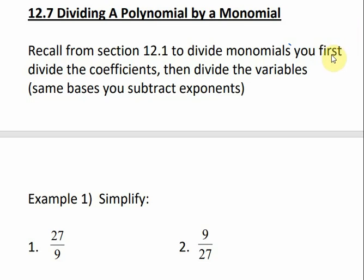This is 12.7, dividing a polynomial by a monomial. In 12.1, to divide monomials, you first have to divide the coefficients and then divide the variables. If you have the same bases, then you subtract the exponents. Let's look at some examples.